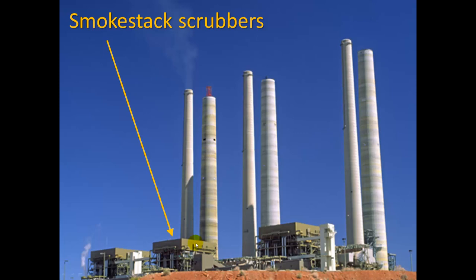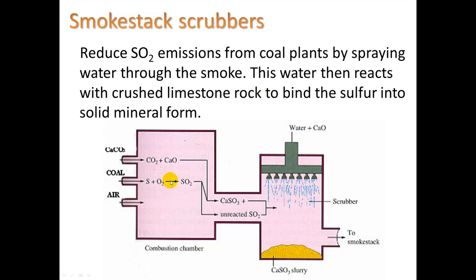Smokestack scrubbers remove sulfur oxides. The sulfur oxides from the combustion chamber pass through the scrubber — think of it like showerheads shooting a mixture of water and calcium oxide, a mineral mined from the earth. The sulfur reacts with the calcium oxide to form a calcium sulfate slurry, a kind of moist powder, which can then be collected and placed in a landfill or used for other industrial purposes.